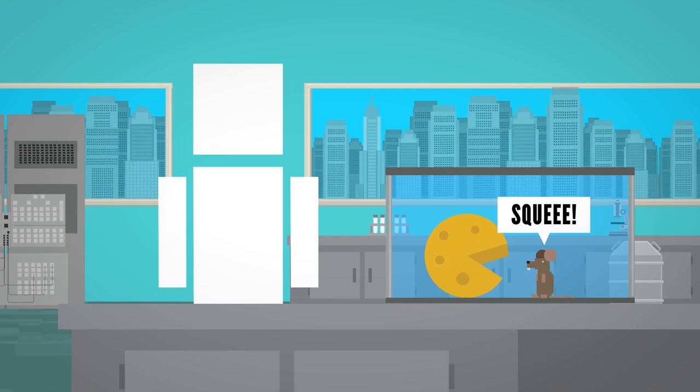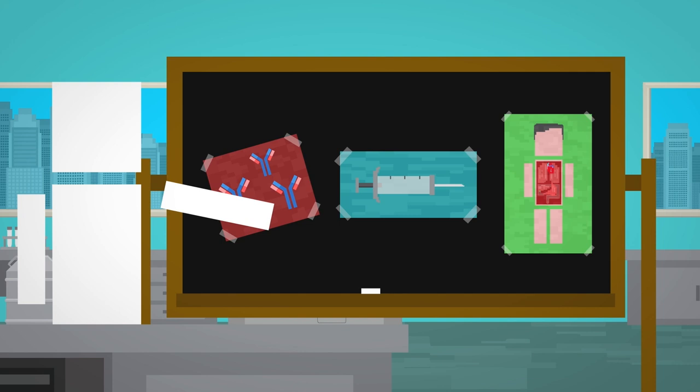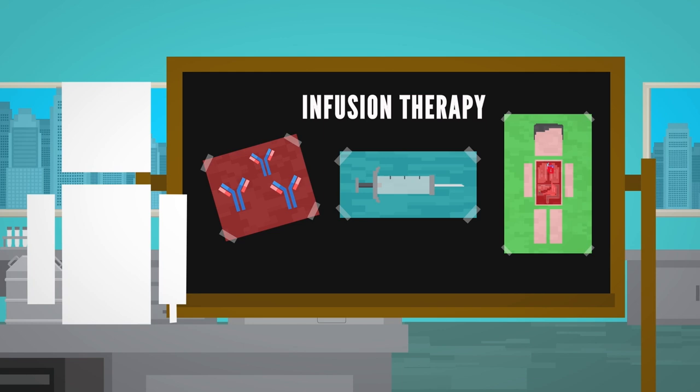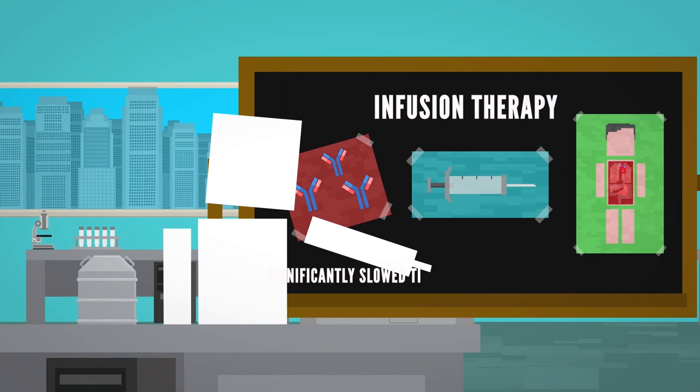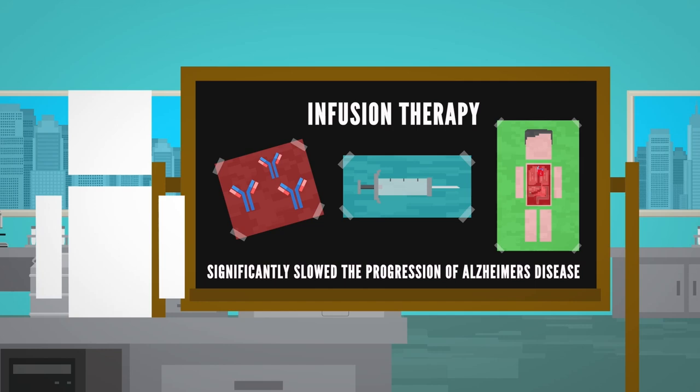Another treatment method is injecting pre-made antibodies into the body. This is called infusion therapy. And there's already one of these medications that has received accelerated approval from the FDA, after clinical studies found that it significantly slowed the progression of Alzheimer's disease. Another one was recently reported to work even better and is expected to get the FDA seal of approval soon.